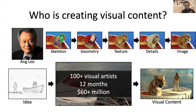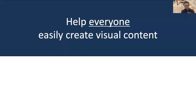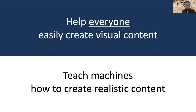But what about the rest of us, who may not have 60 million dollars? What can we do if we want to express ourselves visually? In my lab, our long-term research goal is to help everyone create visual content more easily. Our approach is to first teach machines how to create realistic visual content automatically. The machines can do all the tedious work and fill in the details given humans' high-level instructions.